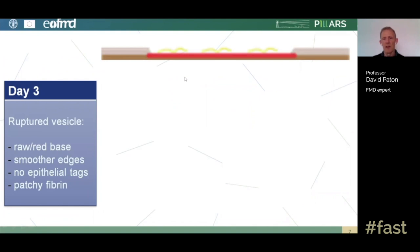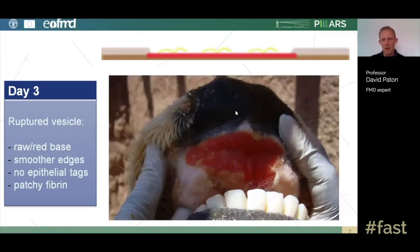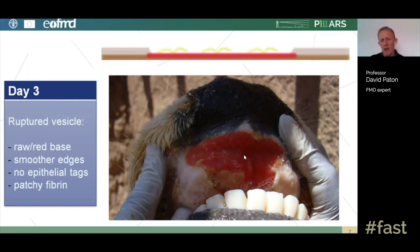At day three, the schematic shows that edges have become blunt, tags have mostly been lost, and there is still a fairly red base, but now a yellowish or grayish fibrin starts to appear. On this cow's dental pad, the epithelial tags have been lost, giving smooth edges all the way around, with a very red, raw circular lesion base. Patches of fibrin are starting to appear but not yet covering the whole lesion — this is a characteristic day three lesion.